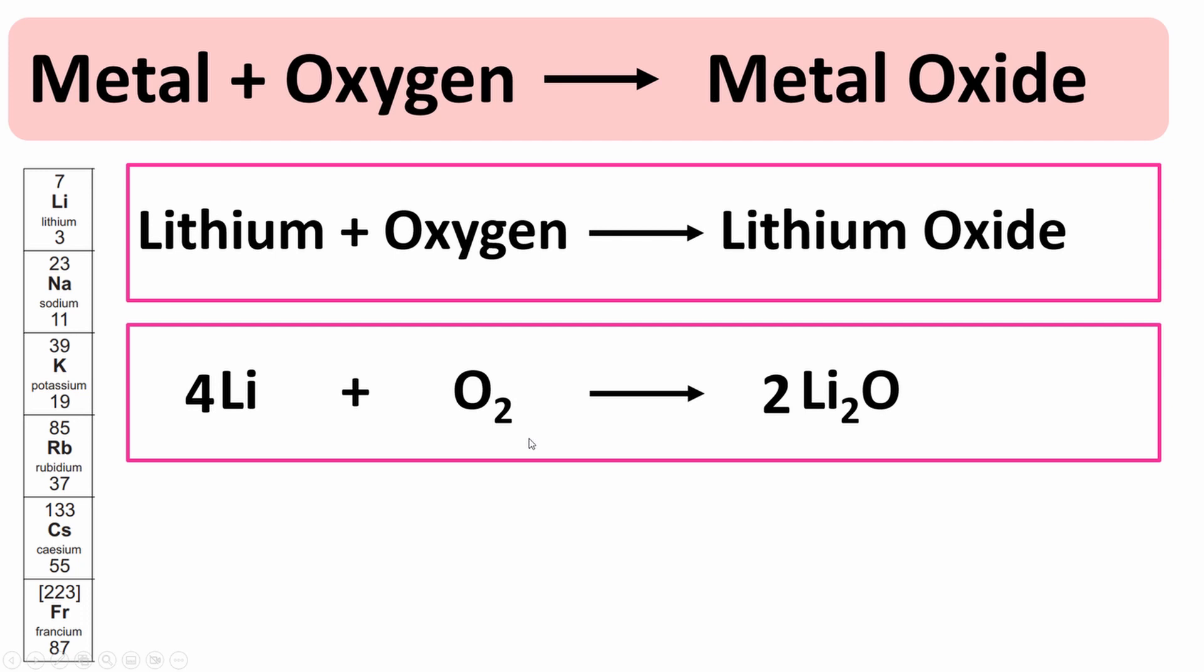You also need to include state symbols, so which state these chemicals are in. Are they solids, liquids or gases? So lithium is a solid, it's a metal, it's a solid. Oxygen is a gas so that's a G and lithium oxide is a solid. So this is your complete symbol equation and your word equation at the top.